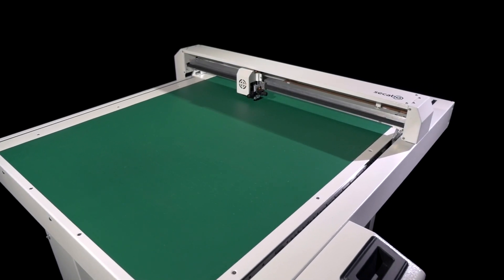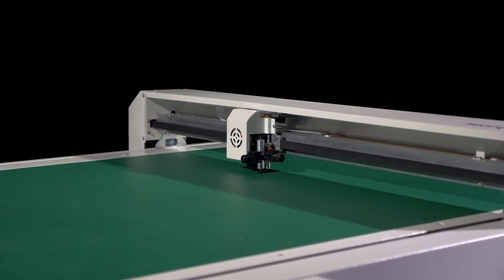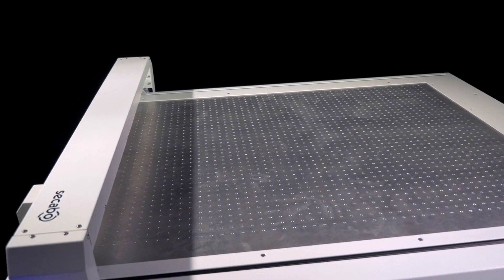The compact floor unit offers a maximum work surface of 78cm x 108cm and reliably fixes the applied material on a vacuum table.